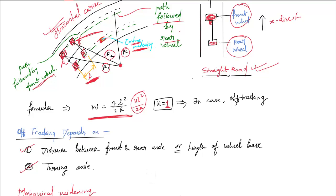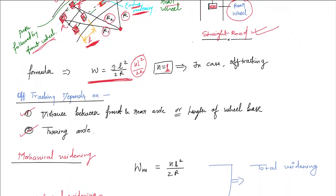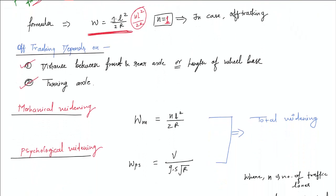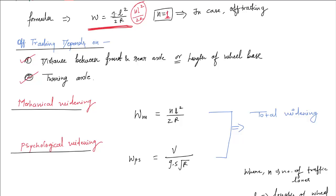Off-tracking generally relates to extra widening. There are two most important widening concepts: first is mechanical widening, second is psychological widening. The mechanical widening formula — its derivation is available in books. The formula for mechanical widening WM equals NL² / 2R, which we can also call off-tracking.